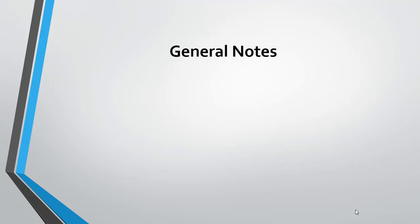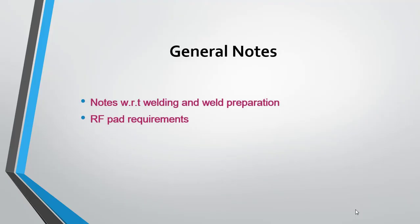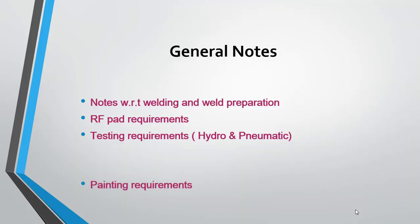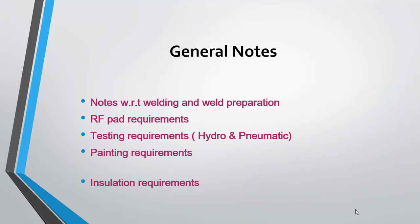The sixth area is general notes. General notes indicate the additional requirements for piping, which include welding and weld preparations, RF pad requirements, testing requirements for hydrotesting and pneumatic testing, painting requirements, and insulation requirements.